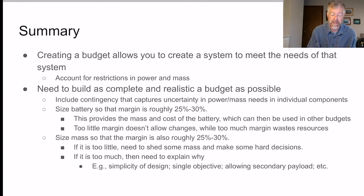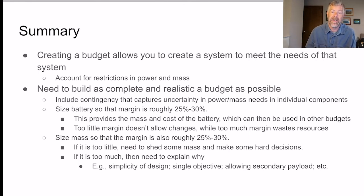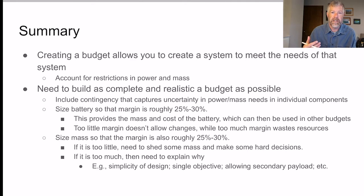Too little margin doesn't allow for changes, while too much margin wastes resources — that's why you aim for roughly 30 percent. For mass, if margin is too low — say 10 percent — you need to shed mass and make hard decisions about what to cut. If it's too high — say 100 percent — you need to explain why, for example because you're keeping the design simple or planning to offer space for a secondary payload. This is a design strategy many satellites use when launching on a rocket. Hopefully this gives you enough to download the spreadsheets and get a good start on your project.